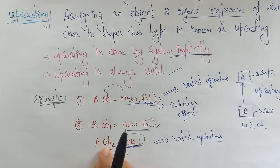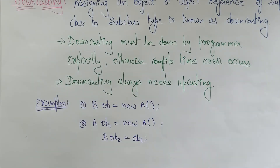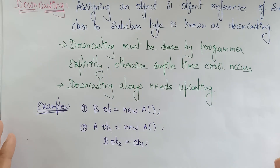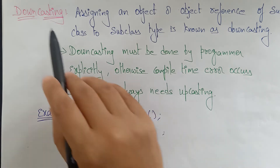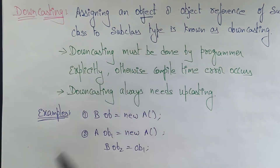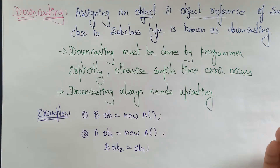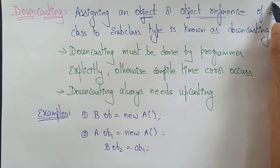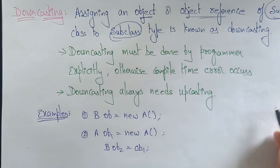So this is about upcasting. Now let's see downcasting. Then we will work on some examples — code snippets — whether upcasting or downcasting is valid or not. Downcasting means assigning an object or object reference of a superclass to a subclass — that is known as downcasting.